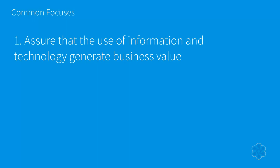One common focus of governance is assuring that the use of information and technology generates business value — making sure that anything your IT group is doing actually generates business value and not just wasting money. At larger organizations, this extends to taking inventory of your resources, because if you're accidentally running EC2 instances or AWS services with unused capacity, that's wasted spend. We need to make sure we don't have anything sitting idle that's costing us money.